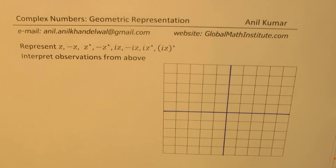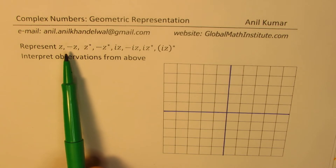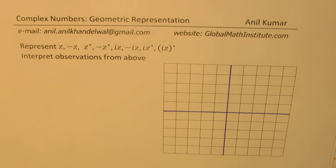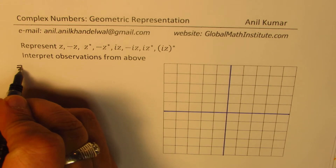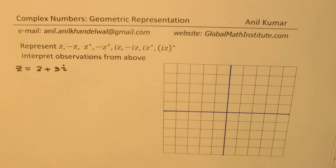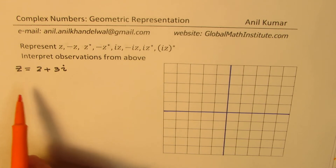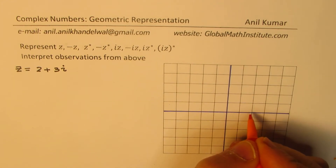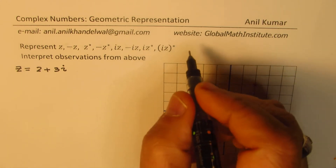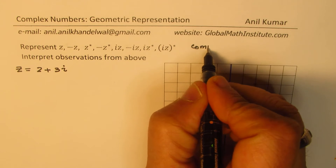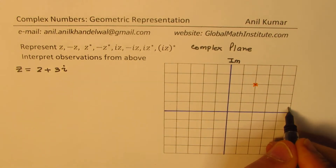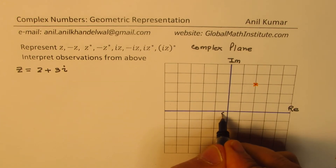Now we're going to take a complex number z and see what really happens when we take its negative or its conjugate. Let's take z equals 2 plus 3i. First, mark the point 2 plus 3i — two units to the right and three units up. This is our complex plane, with the imaginary axis vertical, the real axis horizontal, and O as the origin.